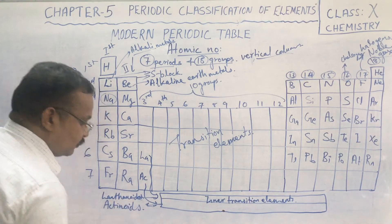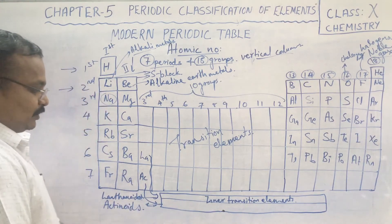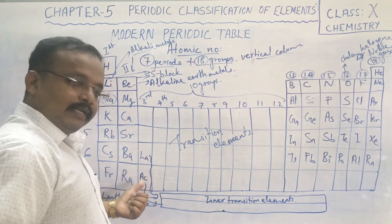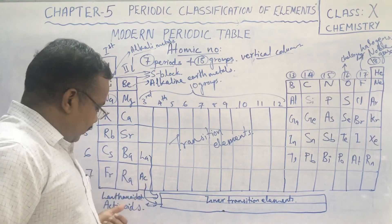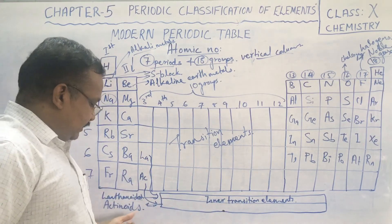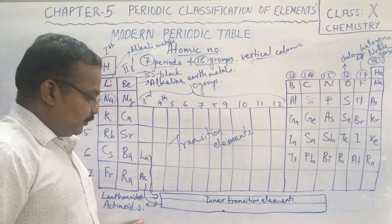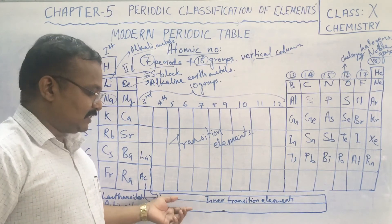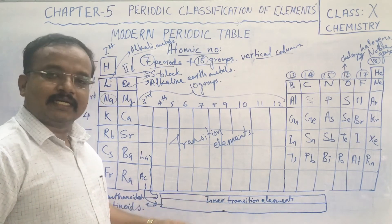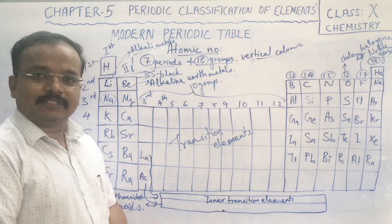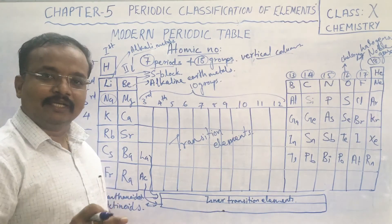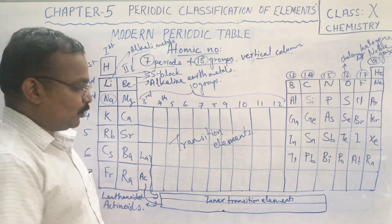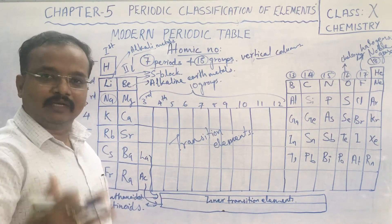From lanthanum we have the lanthanoids, and from actinium we have the actinoids. These form a separate block called the inner transition elements. They are actually radioactive in nature and have special characteristics that you will learn in higher classes.